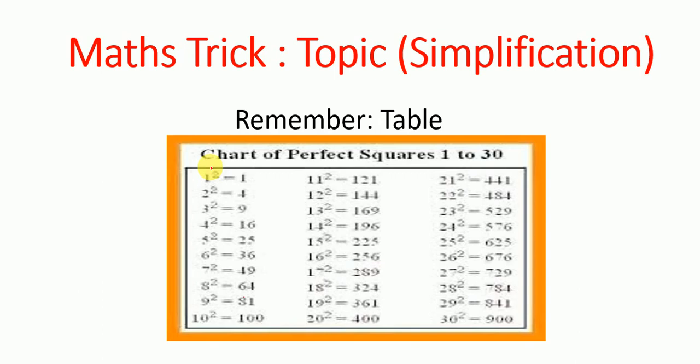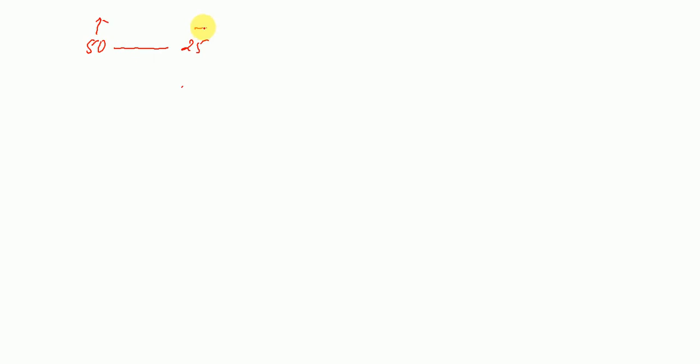If you remember the tables from 1 to 30, then you can extend to 200. Now, let's use the tables from 1 to 30. For any number near 50 — for example, if any number is close to 50 — you will add or subtract from 25.